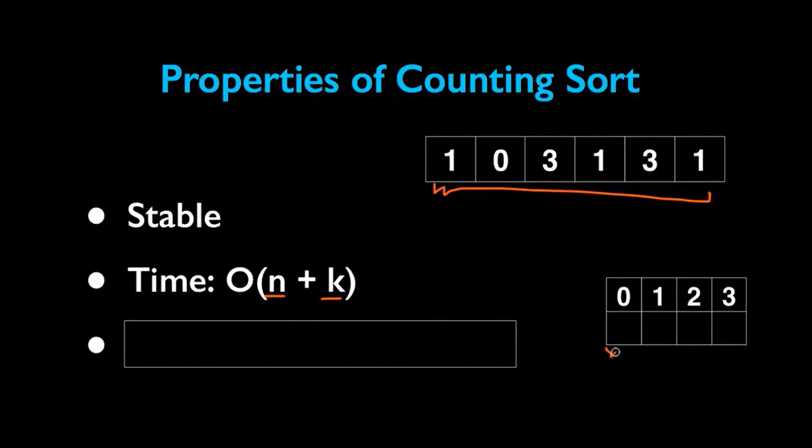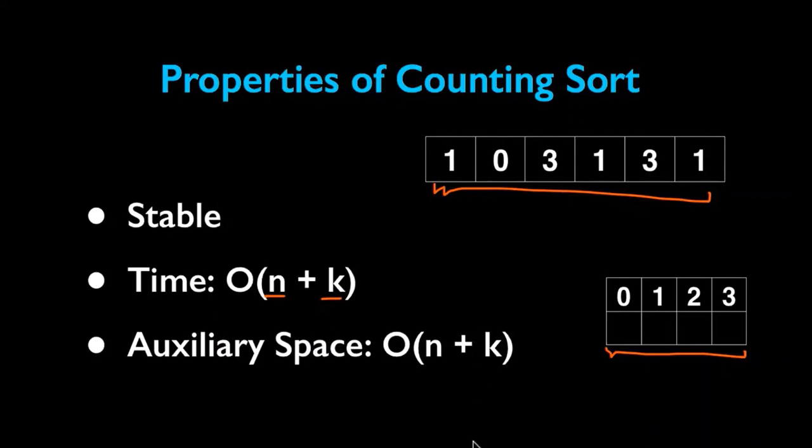The space complexity is again O(n + k). For this counting sort, we are creating an entire new array and an array of length k for storing the starting index.